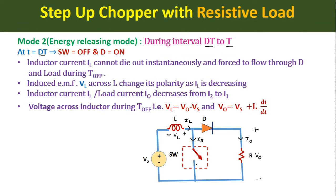At time t = dT, switch SW turns off and acts as an open circuit. Due to this interruption in inductor current, a self-induced EMF is induced across the inductor to oppose the change. The polarity of the self-induced EMF is opposite to that in Mode 1 — negative on the X point and positive on the Y point. Because of this positive polarity at Y going to the p-side of diode D, the diode goes into forward bias and starts conducting.